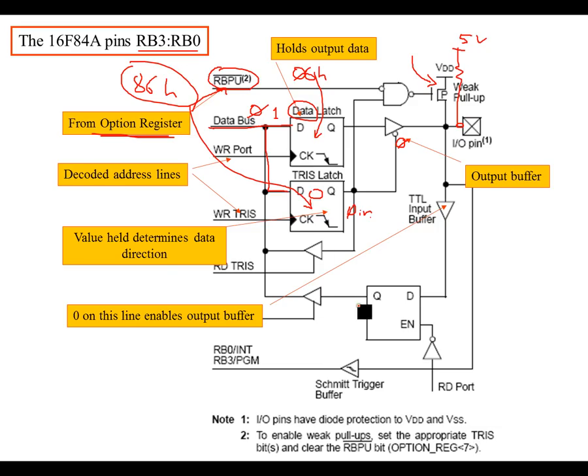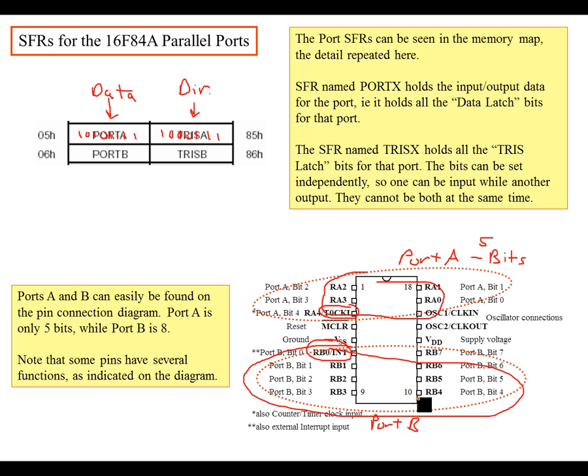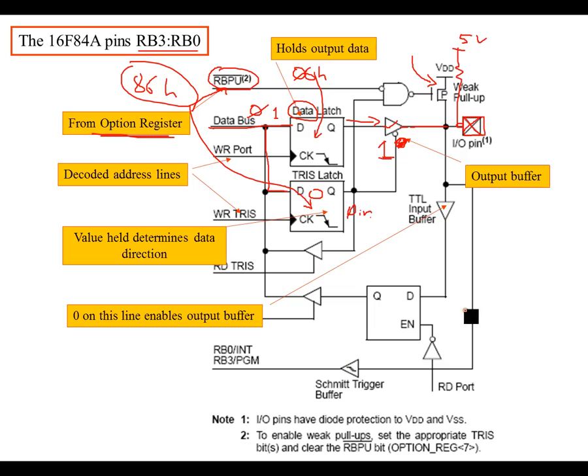We talked about the case of writing a zero or writing data, selecting the data, the TRIS register to be an output. But now let's talk about what if we want it to be an input. If we want it to be an input, then this TRIS register basically needs to be a one here instead of a zero. A one will disable this, which will basically disconnect it from this pin, the IO pin, which this is called, let's just take an example here. Let's look at RB0, say RB1.